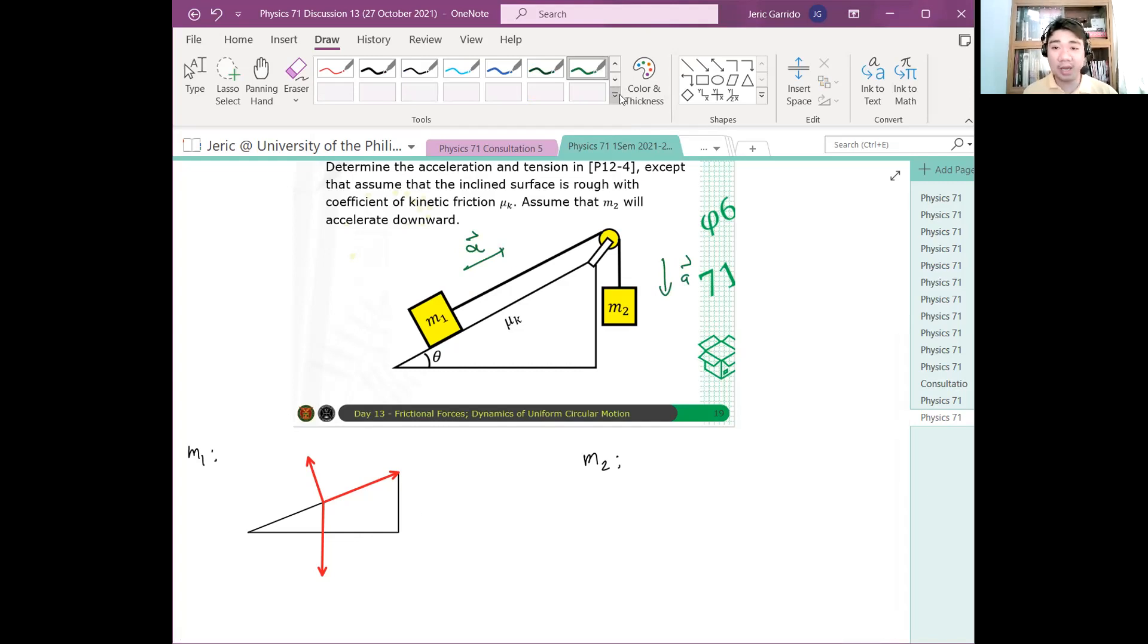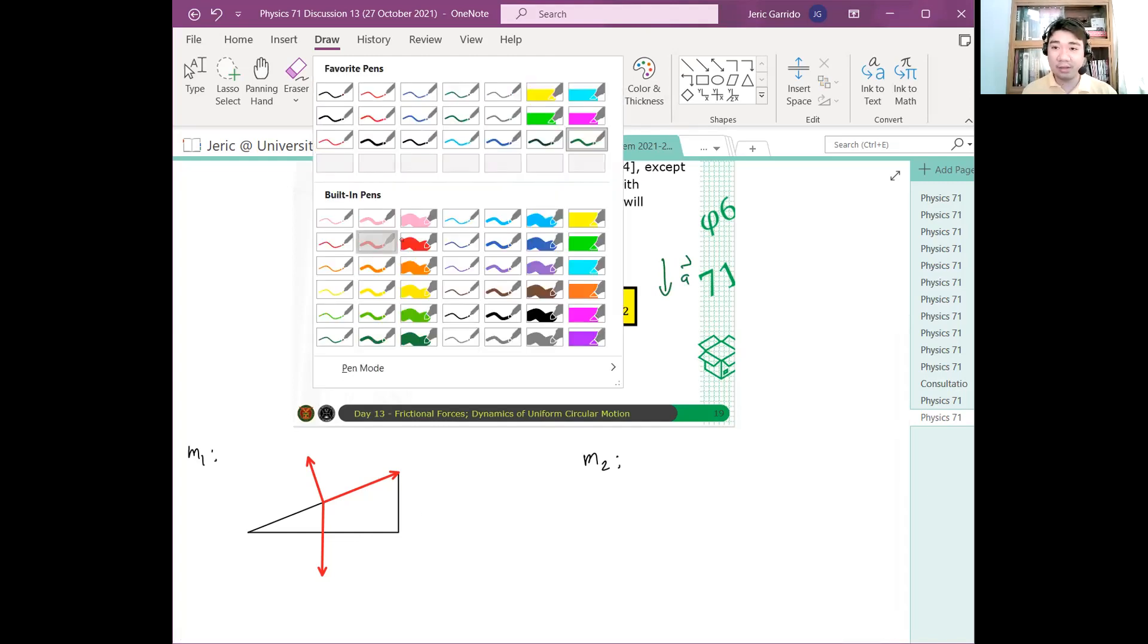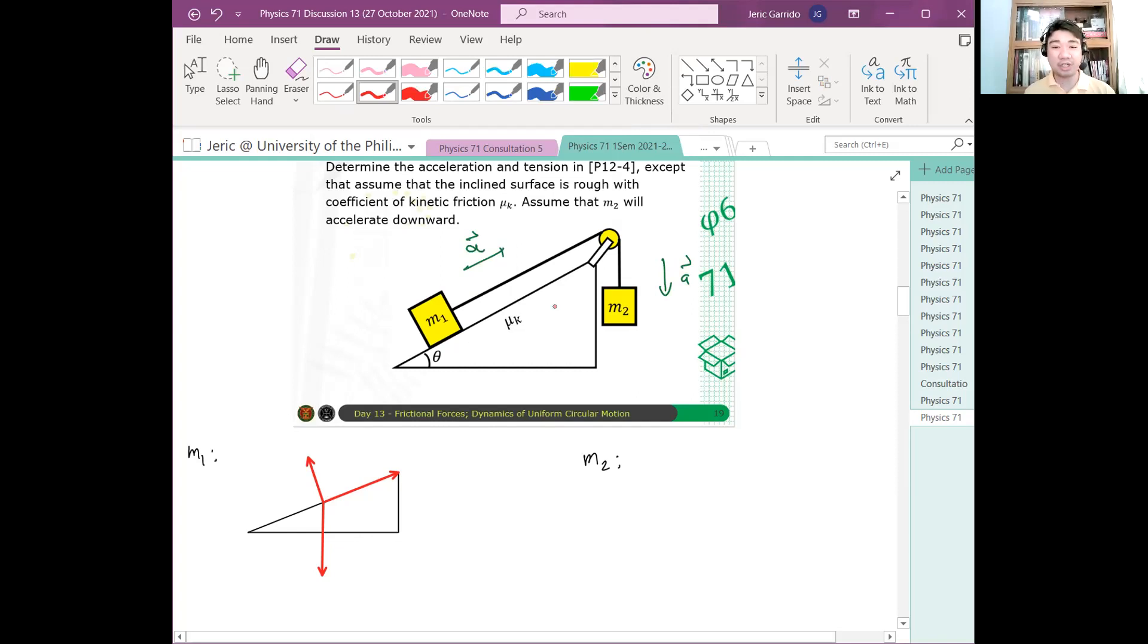But in our assumption, we will assume that the acceleration of the system is in this direction here, in this direction. So this is the direction of the acceleration. This is the direction of the acceleration. And hence, from here, we say that the direction of frictional force. If there are no other forces acting on the system, what will happen? Since M2 will be downward, we expect that M1 will go upward. Upward the direction nyan. Pakyat siya. And hence, the frictional force should be acting in the opposite direction. Something like that. Tama?